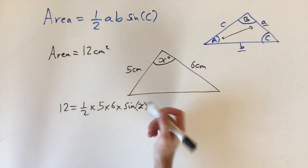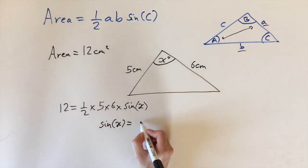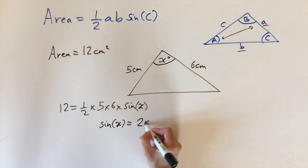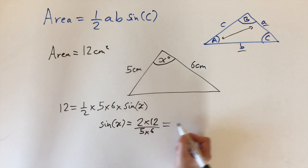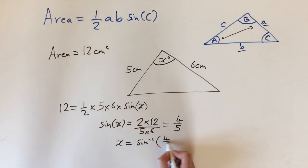Sine of x—if I bring the 2 up, 2 times 12 divided by 5 times 6—this simplifies to 4/5. To find x we take the inverse sine. x equals sine to the minus 1 of 4/5. If you plug that into a calculator, the angle is 53.1 degrees to one decimal place. This is the missing angle.